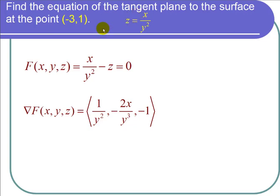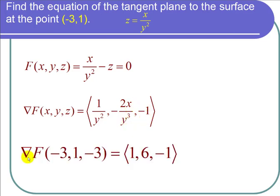If I plug in y is 1 and x is negative 3, 1 over 1 squared is 1, and negative 2 times negative 3 over 1 cubed is 6, and negative 1 is just negative 1. That tells us that the gradient of capital F at the point negative 3, 1, negative 3 is equal to 1, 6, negative 1.